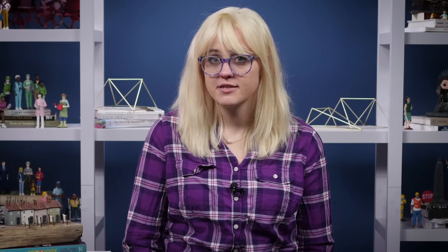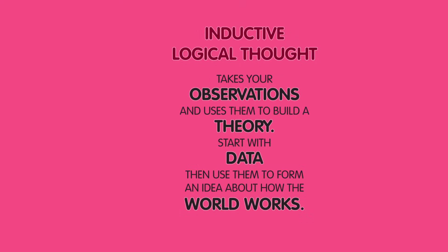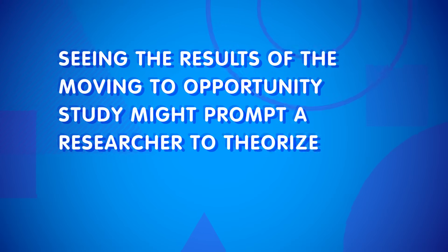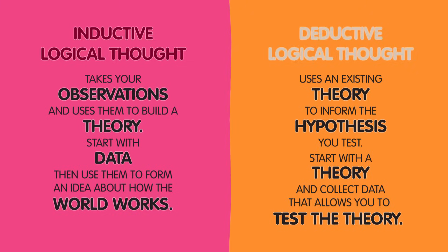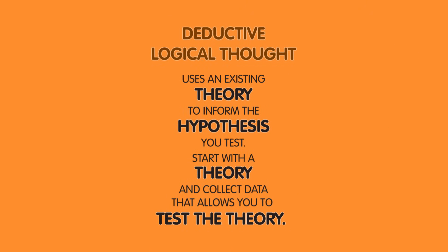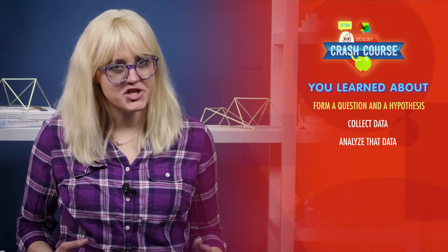Once you've collected your data using one of these methods, the final step is turning that data into information that helps answer your question of interest. You can do this in two ways – through inductive or deductive logical thought. Inductive logical thought takes your observations and uses them to build a theory. You start with data and then use it to form an idea about how the world works. For example, seeing the results of the Moving to Opportunity study might prompt a researcher to theorize that the neighborhood a person lives in is a key factor in their mental health. Deductive logical thought, meanwhile, uses an existing theory to inform the hypothesis you test – you start with a theory and collect data to test it. Theories about the relationship between where you live and your child's well-being is part of what prompted the government to collect data not just on the heads of households in the HUD study, but also on their children. These two types of reasoning are not mutually exclusive – within one study, a researcher will use both to develop theories about the social world. Today we discussed the research method: form a question and a hypothesis, collect data, and analyze that data to contribute to your theories about society.